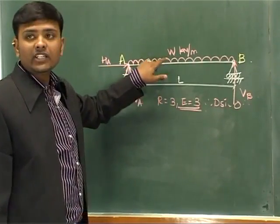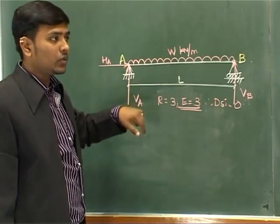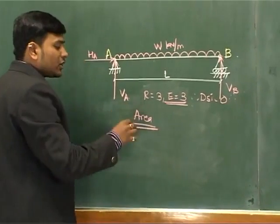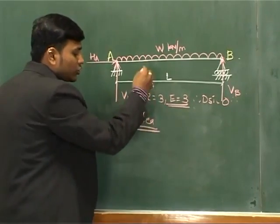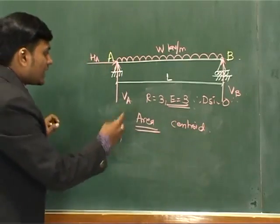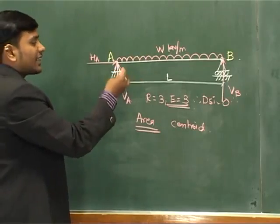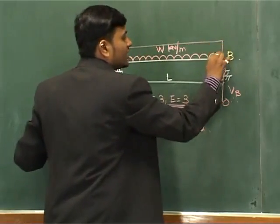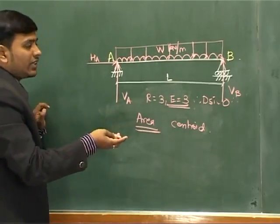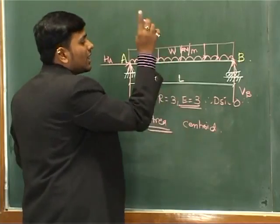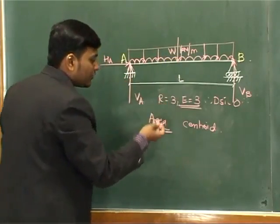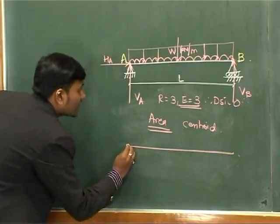To solve such problems, first convert the uniformly distributed load into a point load. The conversion is done by finding its area. For a rectangular UDL, area = W × L, so the equivalent point load magnitude is W×L. This point load acts at the centroid, which for a rectangle is at L/2 from either end.